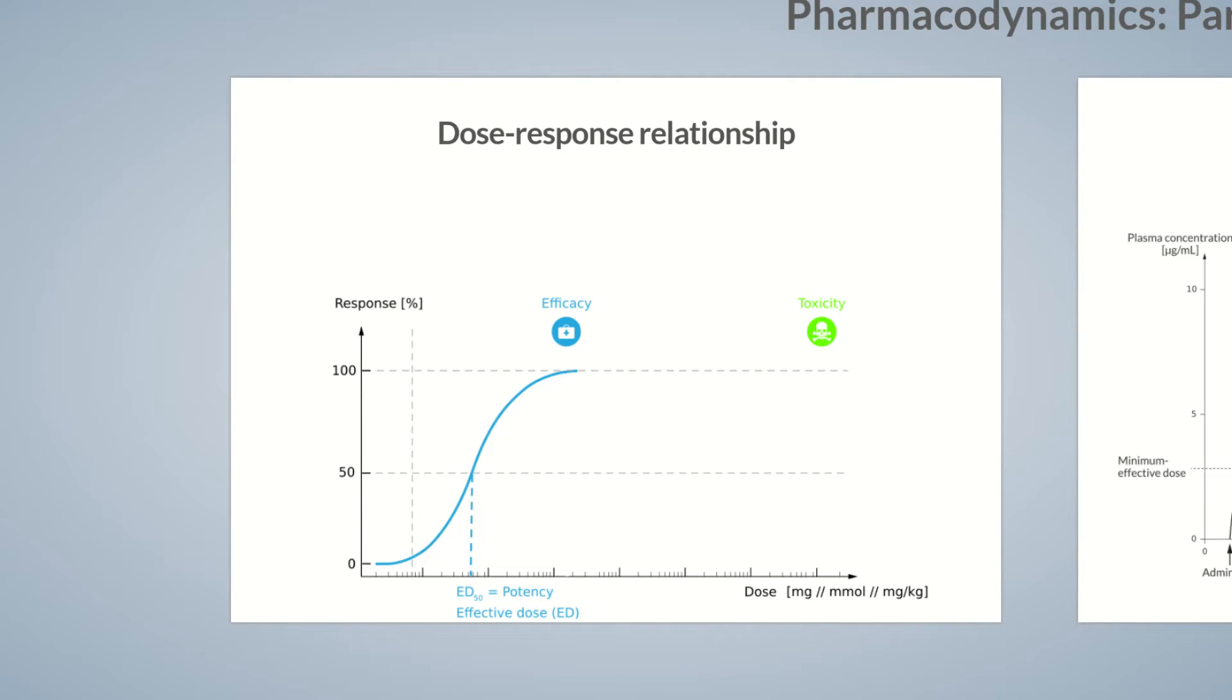This effect can be displayed graphically, producing an S-shaped saturation curve as well, termed the dose toxicity curve. Analogous to the effective dose, the lethal dose, in short, LD, can be determined from the curve.